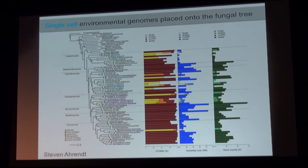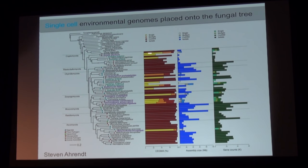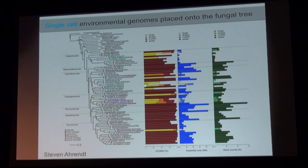Steven and Doina sequenced those five cells, and we looked for conserved genes and were able to easily place them onto the fungal tree — they're shown here in teal. Here are our two Cryptomycota and then down here are our chytrids. Looking at genome completeness using CEGMA, some are actually pretty low — like 15% — and then some are more like 60%. It's really hard when you don't have the ability to do coassembly to get complete genomes, but it's very easy to place them in the tree. Gene counts are extremely low for some of them.